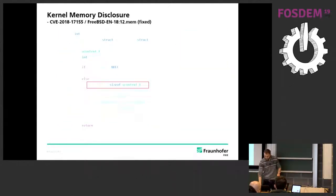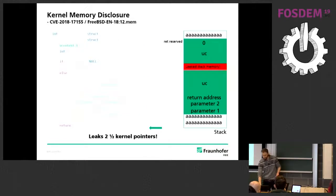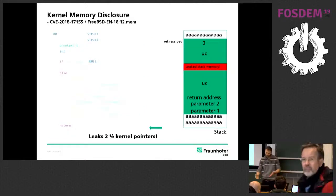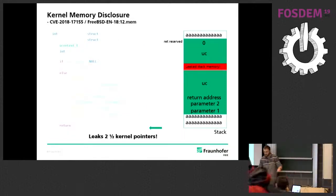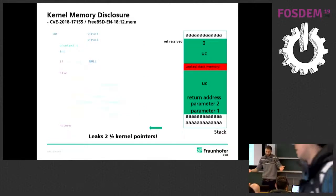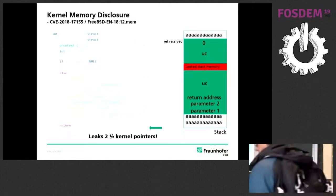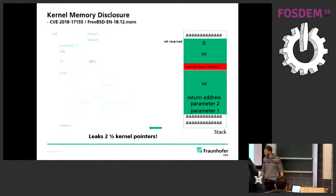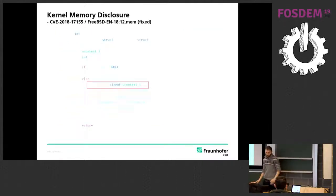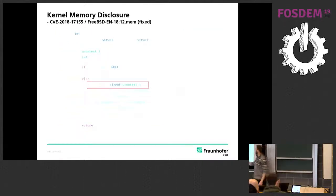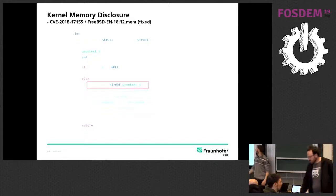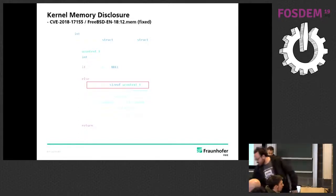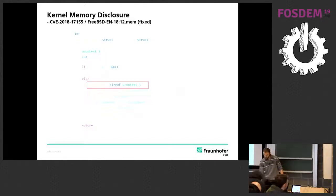In this case, it was two and a half kernel pointers leaked — about 20 bytes every time. You won't see it at first look. If FreeBSD had kernel ASLR, it would have been broken. The fix here is quite easy: you just zero out everything before you write to it.